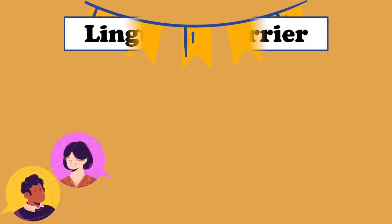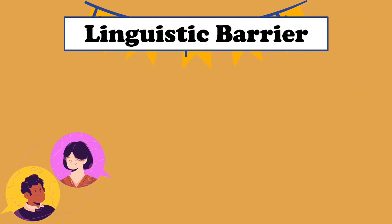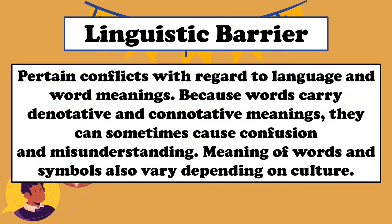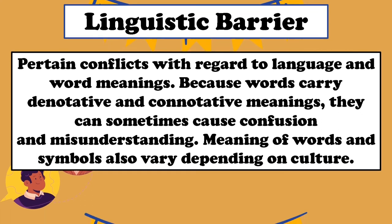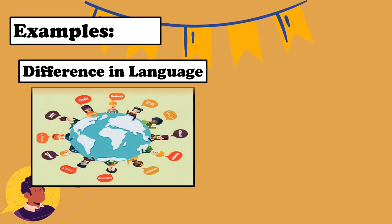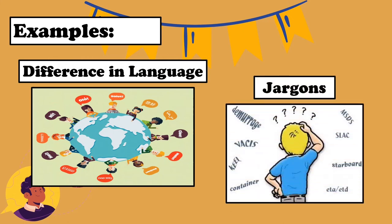The last communication barrier is called the linguistic barrier. Linguistic barriers pertain to conflicts with regard to language and word meanings. Words carry denotative and connotative meanings that sometimes cause confusion and misunderstanding. The meaning of words and symbols also varies depending on culture. Examples of linguistic barriers are differences in languages and jargons, which are also called slang.